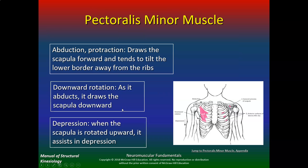If you have tightness in the pec minor, you might get rounded shoulders. Pec minor performs abduction/protraction, drawing the scapula forward and tilting the lower border away from the ribs. It's a downward rotator — as it abducts it draws the scapula downward. When the scapula is rotated upward, pec minor assists in depression.